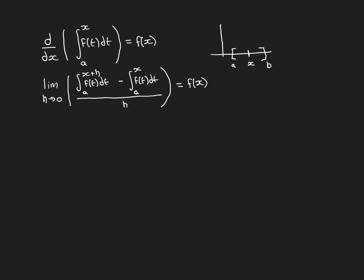Now for most values in our interval [a, b] that x could take on, this h value could be positive or negative. The exceptions are the endpoints: at a, h can only be positive; at b, h can only be negative, because the function isn't necessarily defined outside of the interval [a, b].